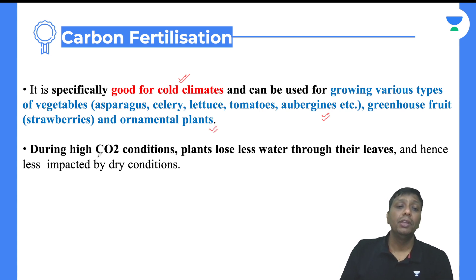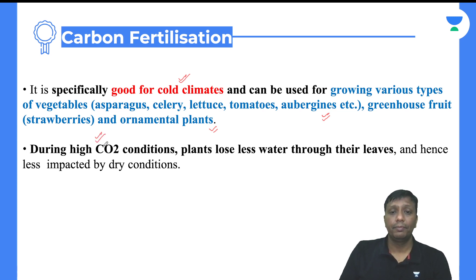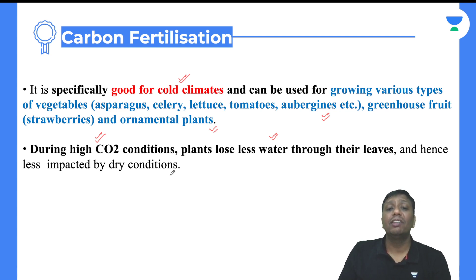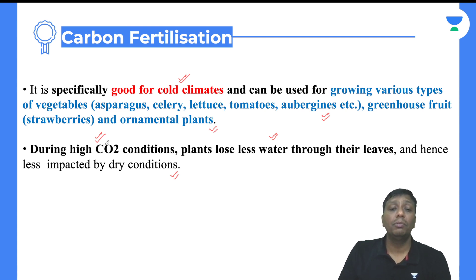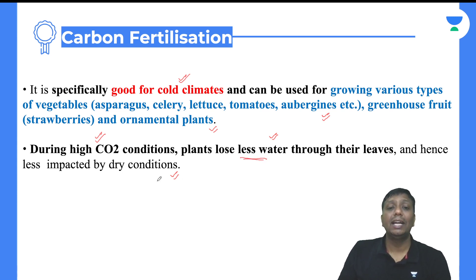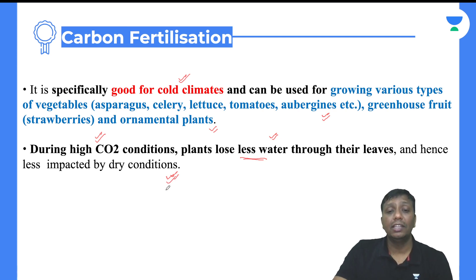One more benefit: during high carbon dioxide conditions, plants lose less water through their leaves. Hence, in dry conditions, plants survive. So carbon dioxide not only helps increase crop productivity — as part of carbon fertilization — but plants will also save water. They will not lose water, and in dry conditions, plants will save their own life and survive.